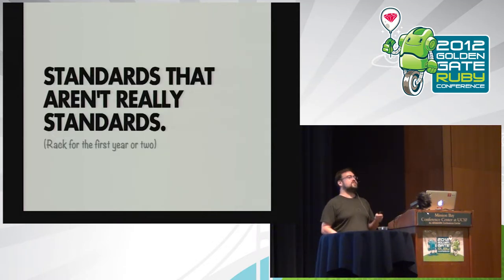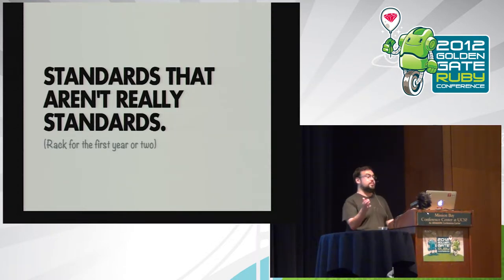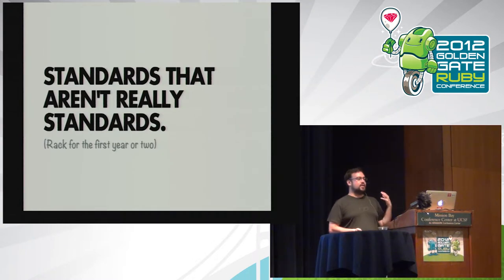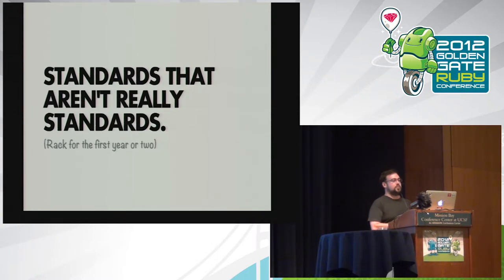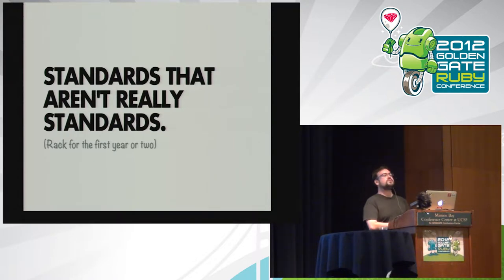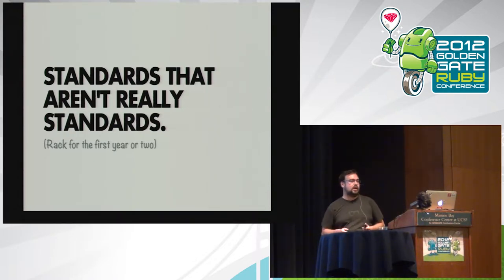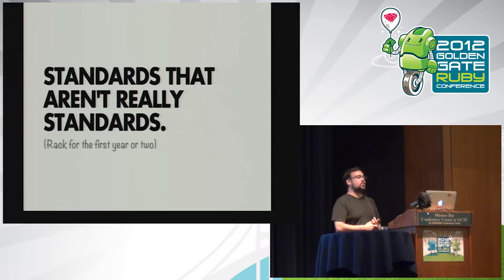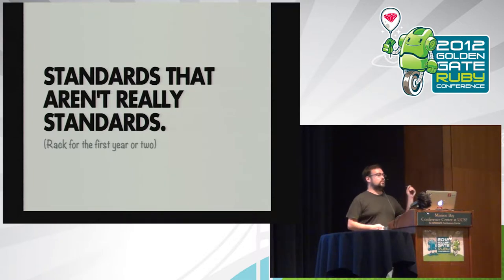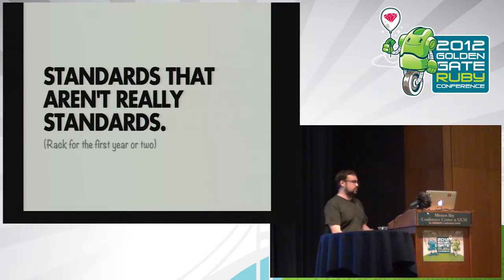What usually ends up happening is there are small players — Merb was an example of this — that realize it's annoying as a little guy to have to actually build server connections to every single thing. One of the side effects that happens early on is that people say: 'Look, there's a de facto standard. Rails, please integrate with this de facto standard.' This is actually a pretty good bludgeon against an integrated solution.